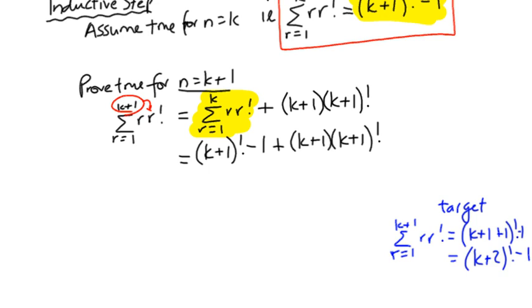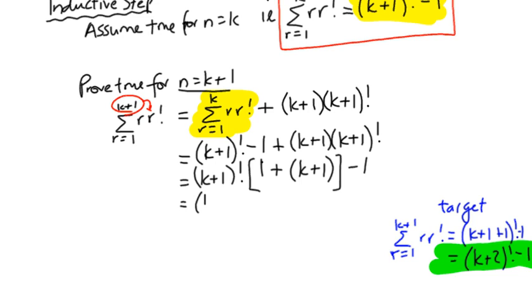Okay, we need to get that somehow from what we've got. So this is why it's good to know where you're heading. Common factors are often a good thing, not always, but in this case we've got a common factor of (k+1)!. So let's see what happens when we take that as a common factor. Here's my common factor. That gives me, I've got a common factor of (k+1)! for two of the terms, right? So if we did that, I'd have [1 + (k+1)], and I've still got the minus 1 at the end.